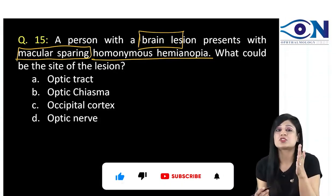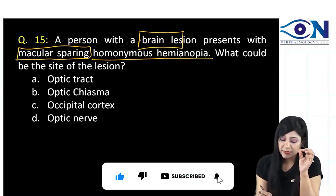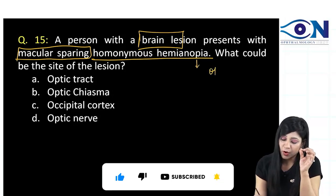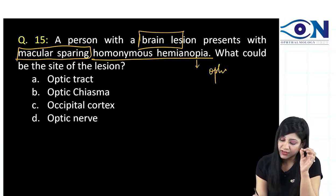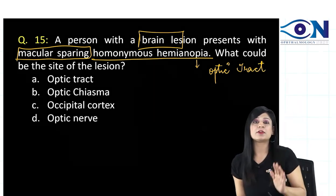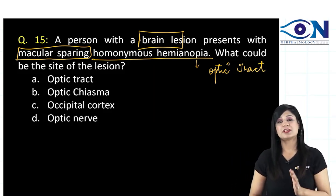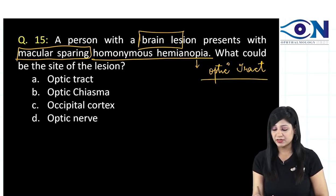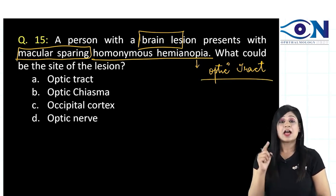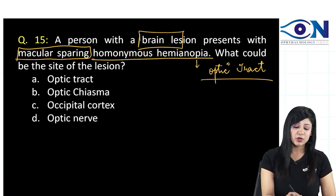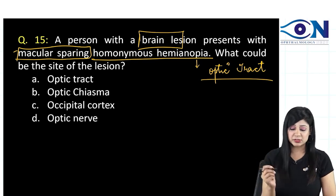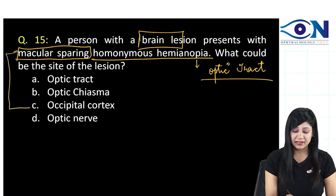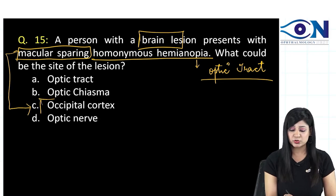This is a direct question. If we have homonymous hemianopia, this starts from the optic tract. Before the optic tract, we do not get homonymous hemianopia. The first lesion that leads to homonymous hemianopia is the optic tract. Now, along with the homonymous hemianopia, if you are getting macular sparing also, that can be none other than the occipital cortex.